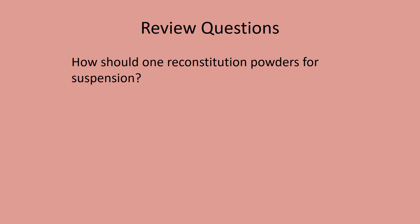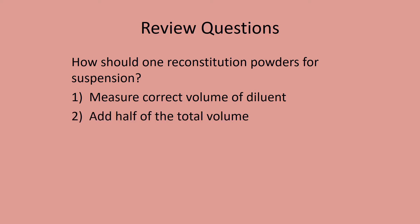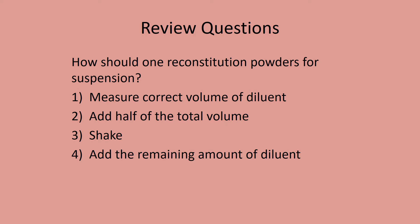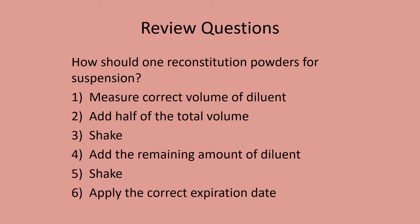How should you reconstitute powders for suspension? First, read the label — it will most likely contain the directions. Measure the diluent quantity, then add only half. Shake well. Add the remaining amount and shake again. Very importantly, since you've reconstituted the product, you'll need to apply the correct expiration date.